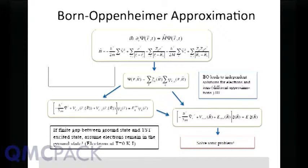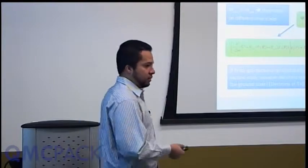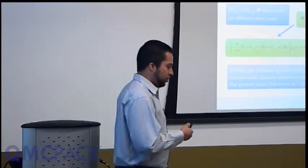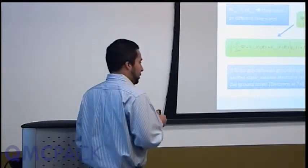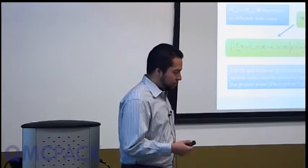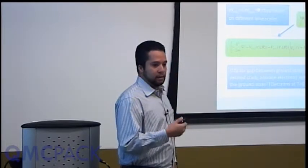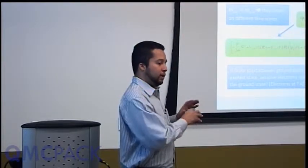To solve the ionic problem, you don't need as much machinery as you need to solve the electronic problem, which is much more complicated because it is fully quantum. We start with the Schrödinger equation. The Hamiltonian at this level contains all terms: electron-electron interaction, ion-ion interaction, two kinetic energies, and the coupling between electrons and ions. The key insight is that the mass of electrons is thousands of times smaller than the mass of the proton, so electrons move thousands of times faster than ions. From the point of view of the electrons, the ions basically don't move at all.